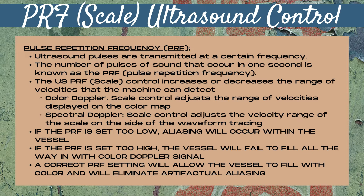With color doppler, the scale control adjusts the range of velocities displayed on the color map. With spectral doppler, the scale control adjusts the velocity range of the scale on the side of the waveform tracing. When the PRF is set too low, aliasing is going to occur within the vessel. On color doppler, this will appear as multiple shades of color within the vessel. With spectral doppler, the signal will wrap around.